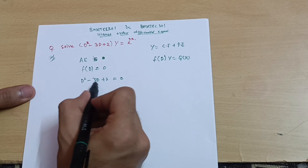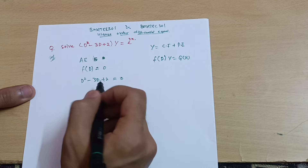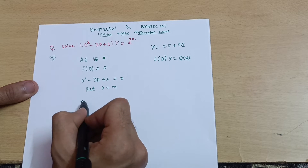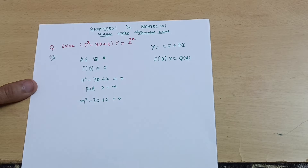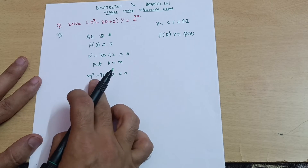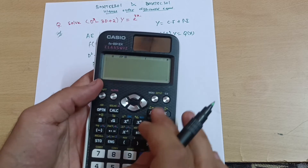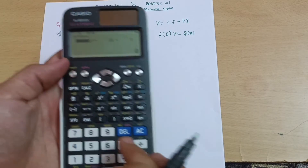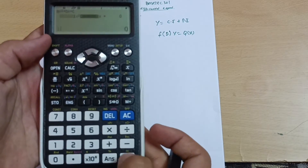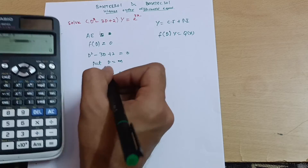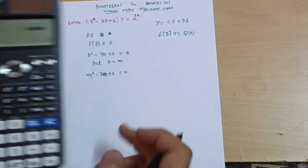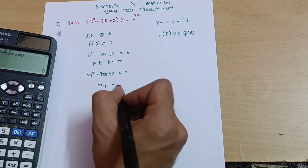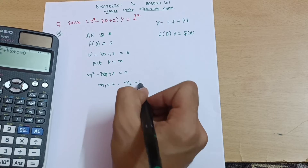We substitute D = m (as some colleges require), giving m² - 3m + 2 = 0. We can find the roots using a calculator: go to Menu > Alpha > Polynomial, select second degree. The coefficients are 1, -3, and 2. The roots are m1 = 2 and m2 = 1.